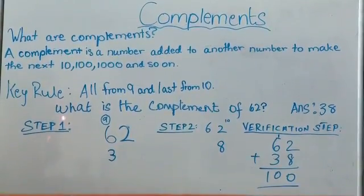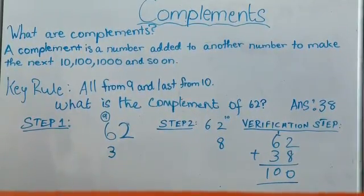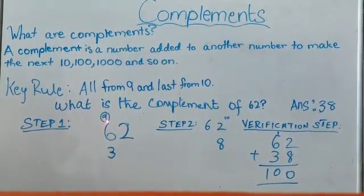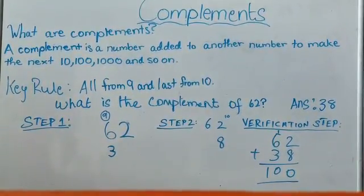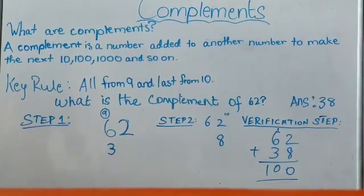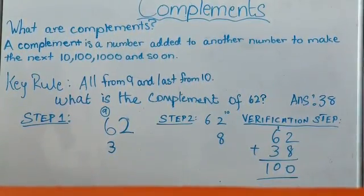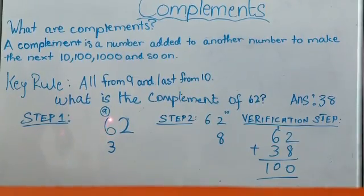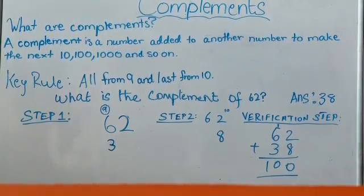Now let's find the complement of a two-digit number. Let's use sixty-two as an example. Step one. Remember the key rule: all from nine and last from ten. So all from nine - let's subtract nine from the tens place. Our tens place number is six. Nine minus six equals two. Step two.